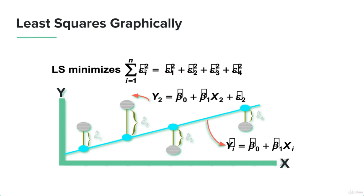Graphically, each E — the error — is the difference between actual values and predicted values on the line. We're taking the difference and calculating the distance between them, and we're going to minimize this using the least squares method. In the end, we're going to update the parameters of slope and y-intercept in a way that minimizes the squared errors. That is the job of least squares.